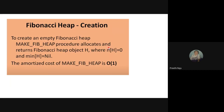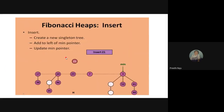In the creation process, the Fibonacci heap is created in this format. First, an empty heap is created where n(H) equals zero and the minimum value is nil, because at creation the Fibonacci heap is always an empty heap containing no values. The cost of the make-Fibonacci-heap operation is always O(1).